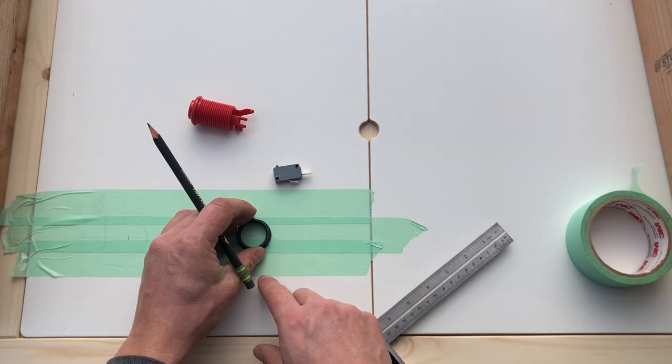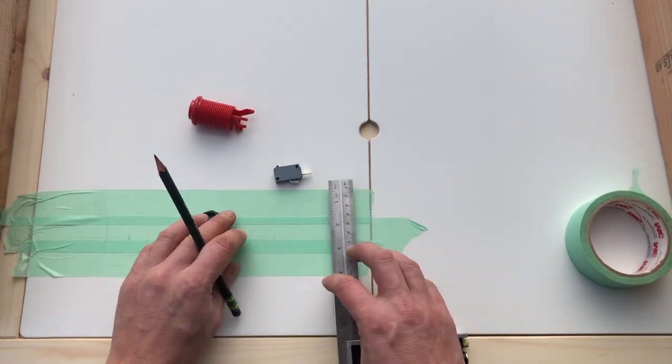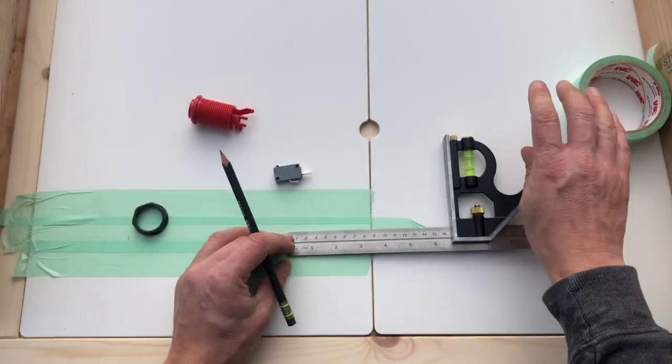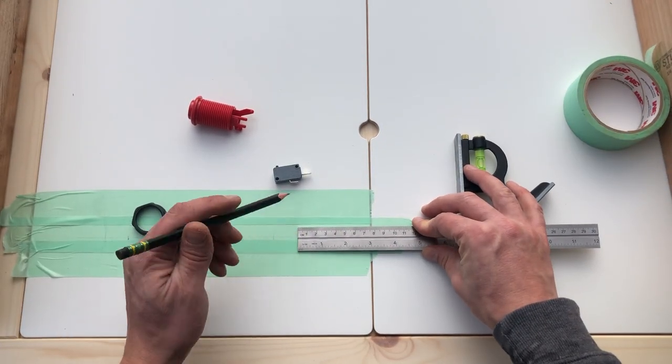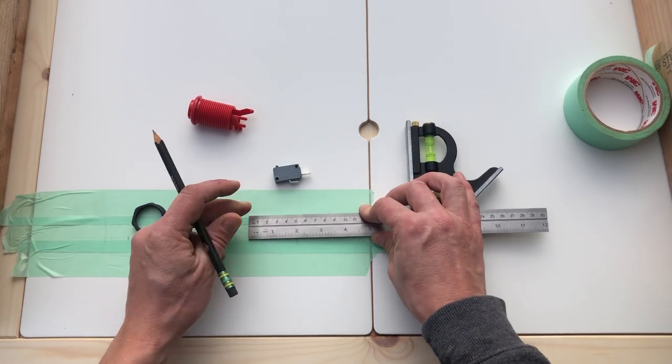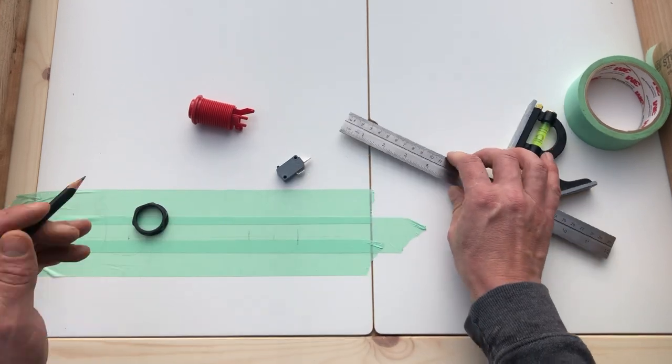I'm going to move this button left so maybe three inches from the side, then I'm going to leave two inches between the buttons and the second button is going to go there.